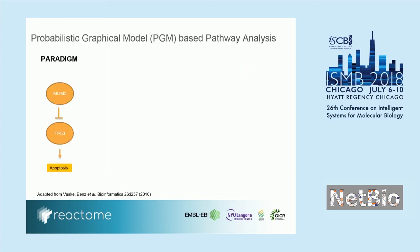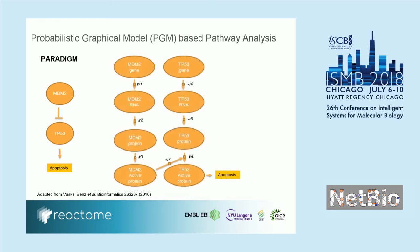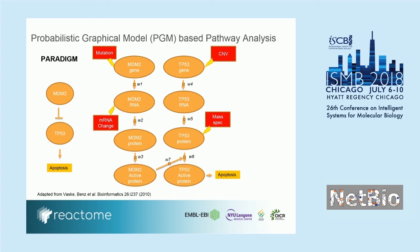For the PGM pathway modeling approach, we've adapted the PARADIGM approach developed by VASCIE, where Reactome pathways are converted into factor graphs. On the left here is an example of an event from Reactome — the P53 apoptosis pathway — and on the right, it's converted into a factor graph. A single protein is converted into four nodes, and corresponding with each of these nodes is a data set, and we can integrate that data into the model.